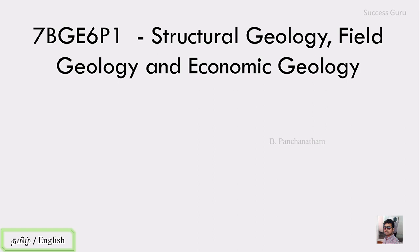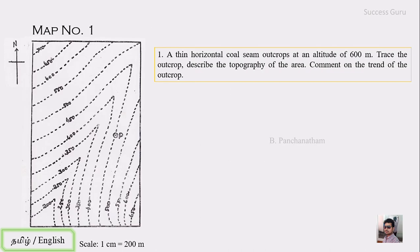Good morning students. We are in our practical classes: structural geology, field geology, and economic geology. This video will be lecture number one and today we will try to cover map number one and two. On the left-hand side you can see the map, which has a directional sign showing the northern arrow and a scale where one centimeter is equal to 200 meters. This is a contoured map.